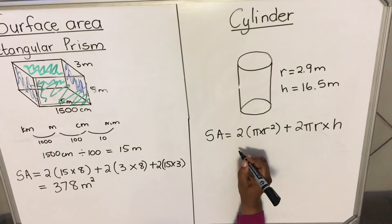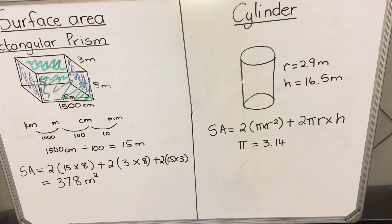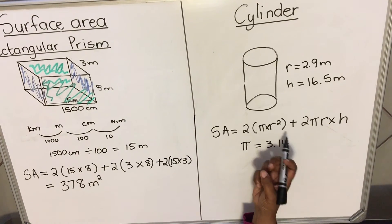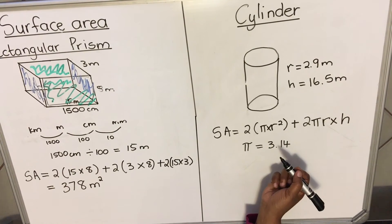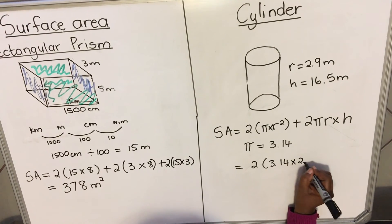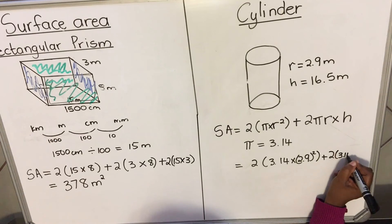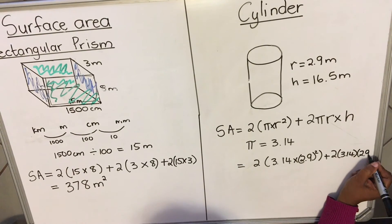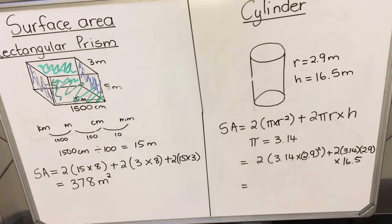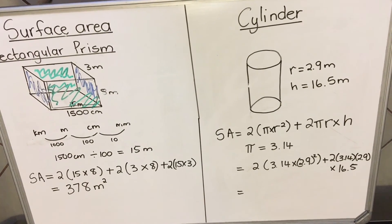Pi will be given in your question paper as 3.14. In the math sheet they also give you the formula for surface area. Our formula becomes: 2 × 3.14 × (2.9)² for the two circles, plus 2 × 3.14 × 2.9 × 16.5 for the rectangle, where radius = 2.9 and height = 16.5. Note that in the first part the radius is squared, but in the circumference part it is not squared. Punch this into your calculator, check your answer, and punch it again to confirm.